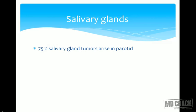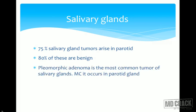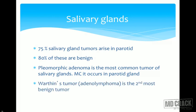75% of salivary gland tumors arise in the parotid gland, and 80% of these are benign. Pleomorphic adenoma is the most common tumor of the salivary gland and most commonly occurs in the parotid gland.